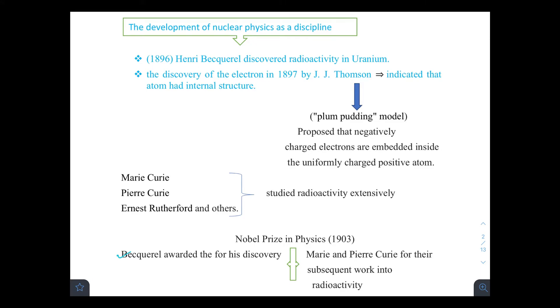As far as the history of nuclear physics is concerned, the development of nuclear physics as a discipline started with the discovery of radioactivity in uranium salts in 1896 by Henry Becquerel. The discovery of the electron in 1897 by J.J. Thomson indicated that atoms had internal structure. J.J. Thomson gave the plum pudding model, which proposed that the negatively charged electrons are embedded inside the uniformly charged positive atom.